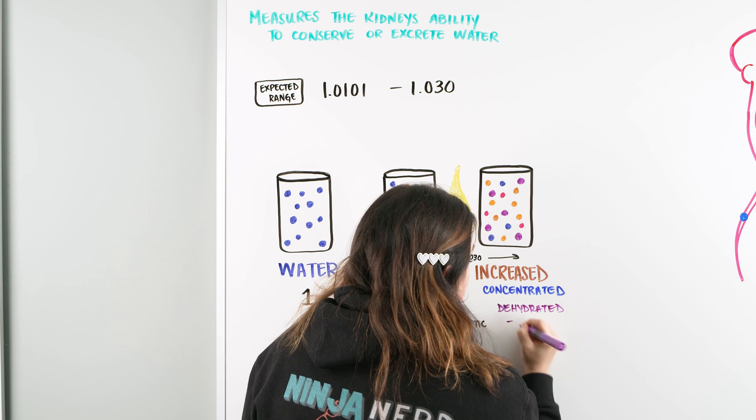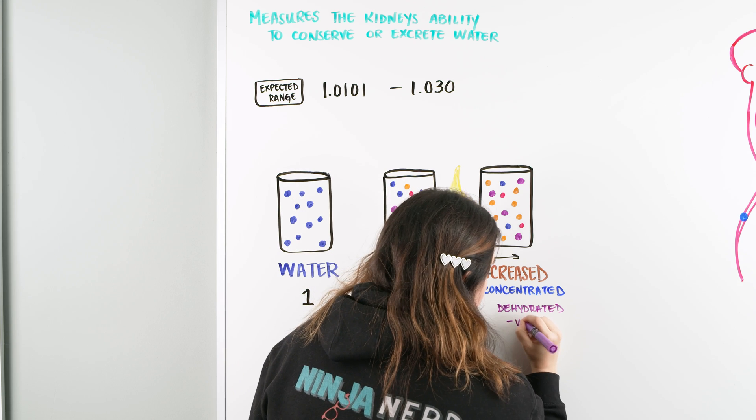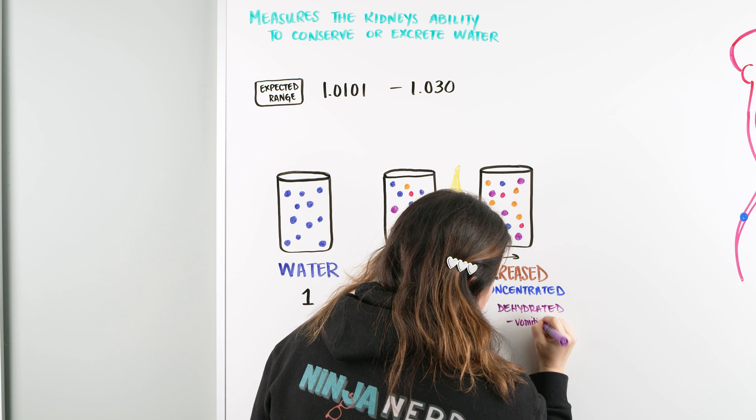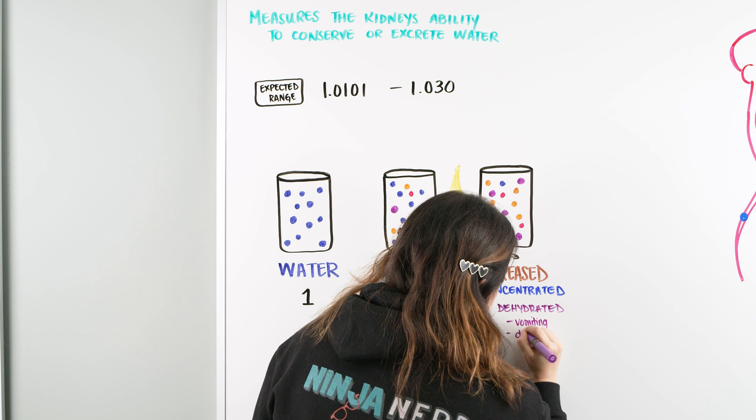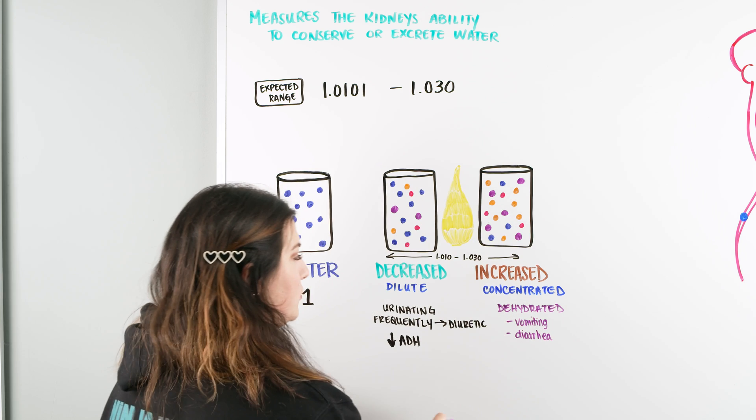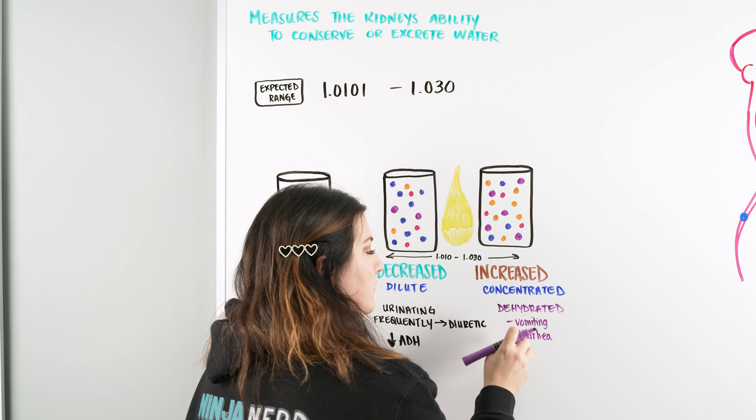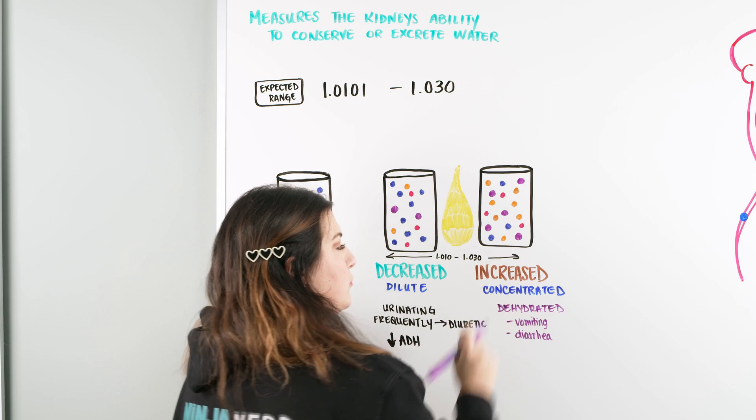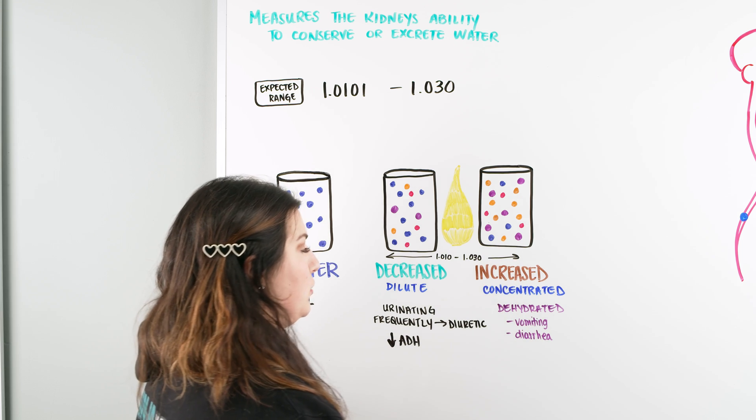And that typically has to do with fluid loss or volume loss. So what are some things that could cause that? It could be vomiting. It could be diarrhea. It could be many other things that are going on with this patient. And because they're losing these fluids, they are now having a more concentrated urine, which is an increased urine-specific gravity.